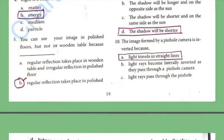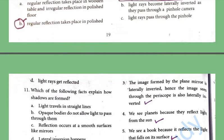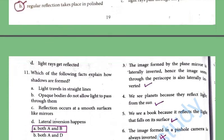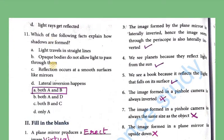Tenth: The image formed by a pinhole camera is inverted because light travels in a straight line. Eleventh question: Which of the following facts explains how shadows are formed? The answer is both A and B — light travels in a straight line, and opaque bodies do not allow light to pass through them.